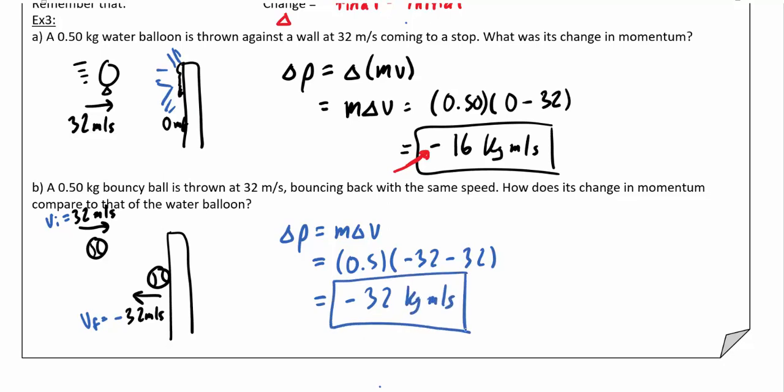So this bouncy ball actually had double the change of momentum because the balloon was traveling to the right and stopped. The ball was traveling to the right, eventually came to a stop when in contact with the wall, but then it actually flung backwards, so it has a much larger change of momentum overall. All right, that's it for momentum.